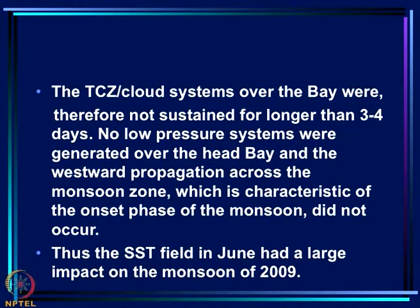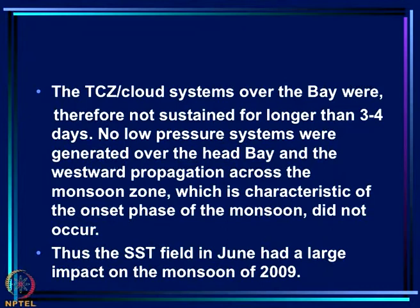This is a case where SST variability — gradients reversing from east equatorial Indian Ocean to the bay — had a major impact on the TCZ or cloud systems over the bay, which were therefore not sustained for longer than three to four days. No low-pressure systems were generated over the head bay, and the westward propagation across the monsoon zone characteristic of the onset phase did not occur. The June deficit was so huge it was never made up through the rest of the season.